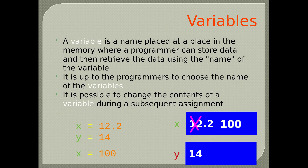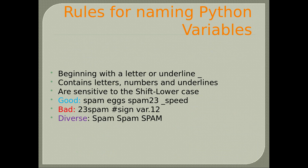Number 2: Variables. A variable is a name stored in the computer's memory where a programmer can store data and then retrieve the data using the name of the variable. It is up to the programmers to choose the name of the variables. It is possible to change the contents of a variable during a subsequent assignment. Let's define x = 12.2 and y = 14. We can redefine x to have a new value of 100 by writing x = 100.